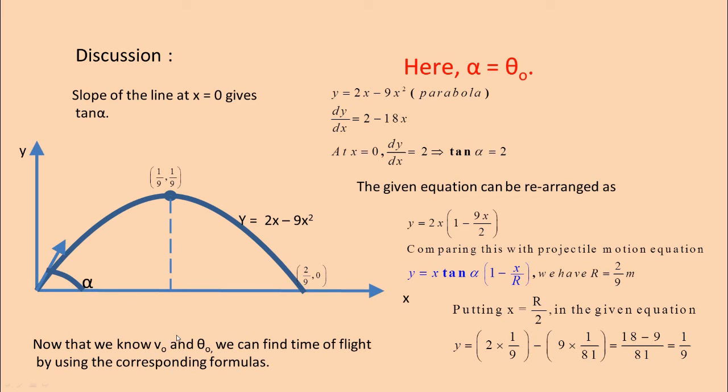So now that we know v₀ and θ₀, we found v₀ already, θ₀ already, we can find time of flight by using the corresponding formula: 2u sin α by g is the time of flight. Here it will be 2v₀ sin θ₀ by g will be the formula for time of flight. But you are not asked. If you want to try, you can try using the corresponding formula for time of flight.